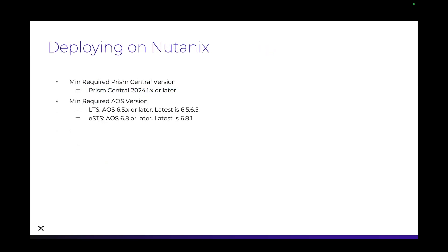Lastly, if you're deploying on top of Nutanix — whether in production or a test/dev environment like Community Edition — the minimum required Prism Central version is 2024.1 or later. For AOS, if you're using LTS that's AOS 6.5 or later, with the latest version at time of recording being 6.5.6.5. For STS it's AOS 6.8 or later — I'm currently using 6.8.1. I'll do the recording of the Harbor Registry setup in the next video. Thank you for watching.